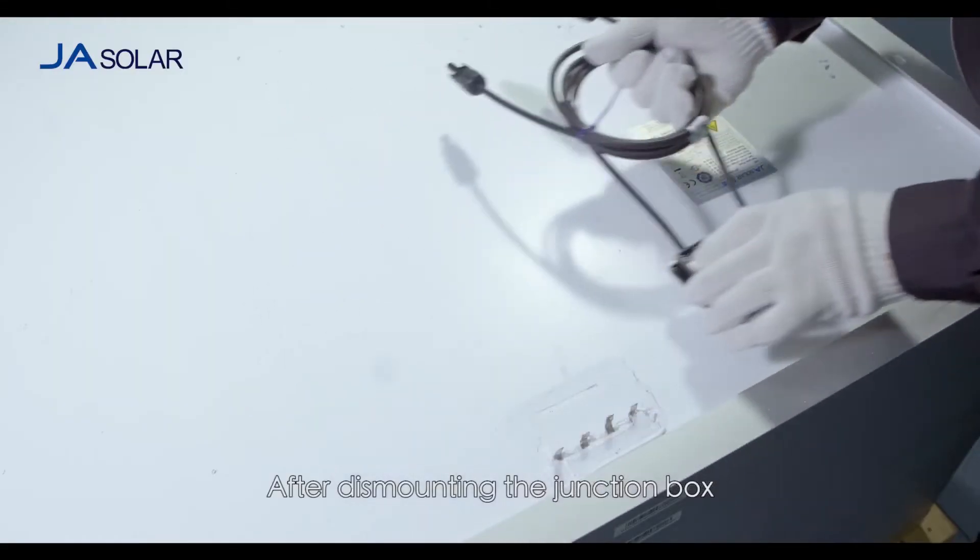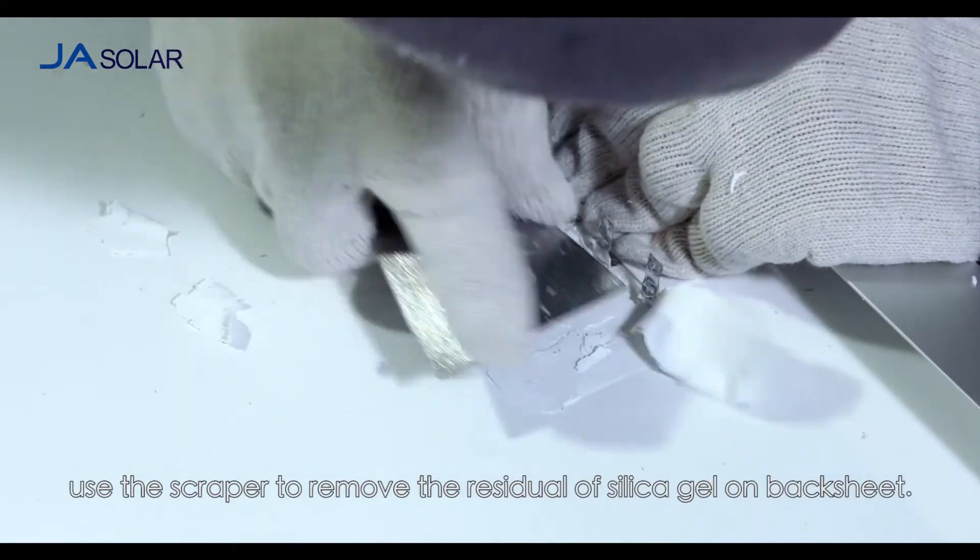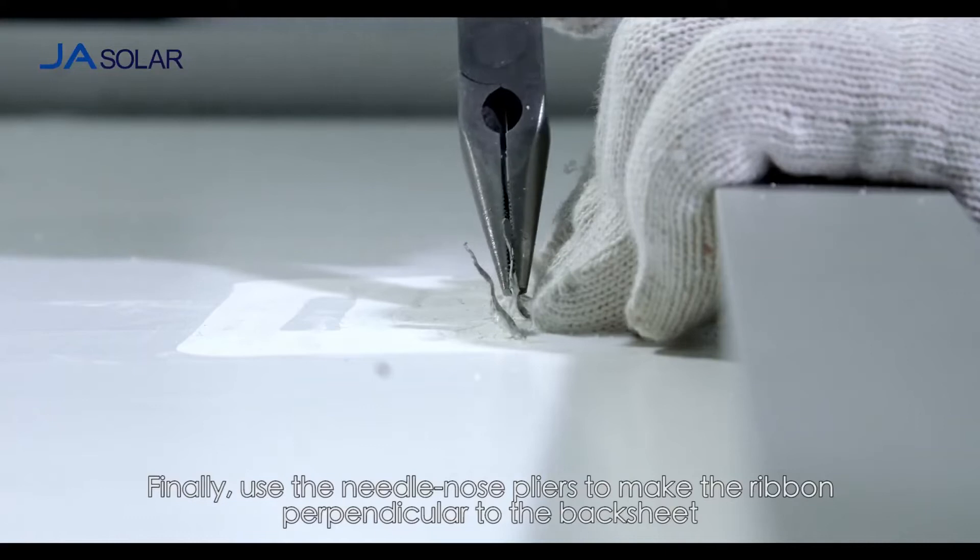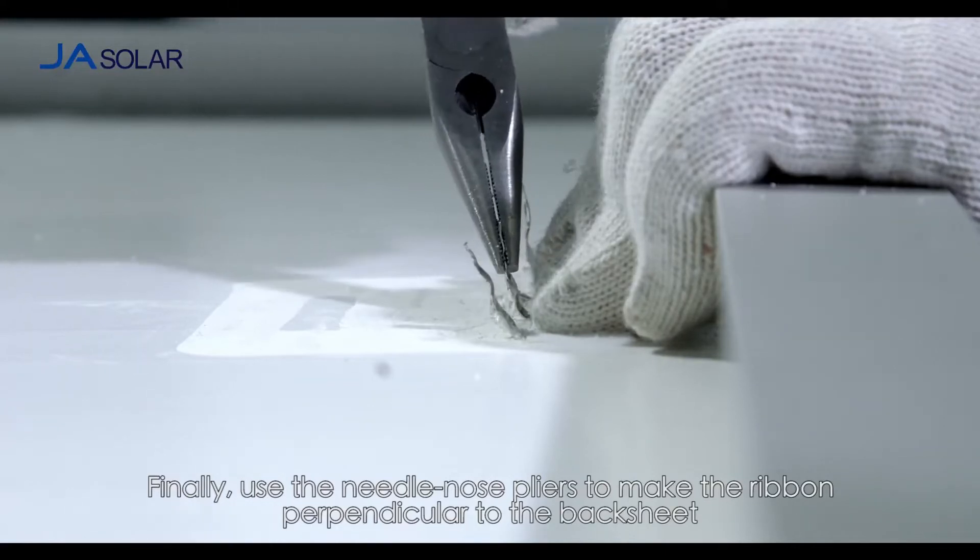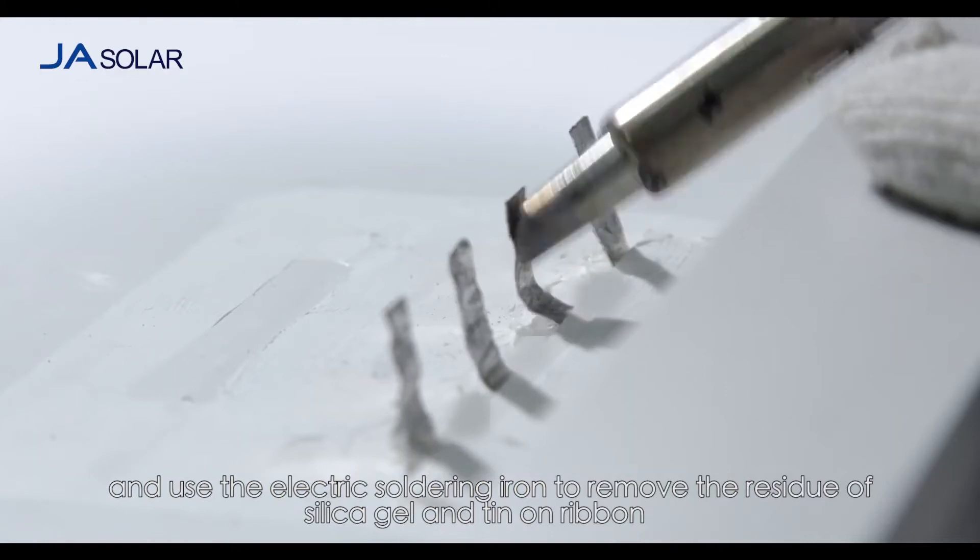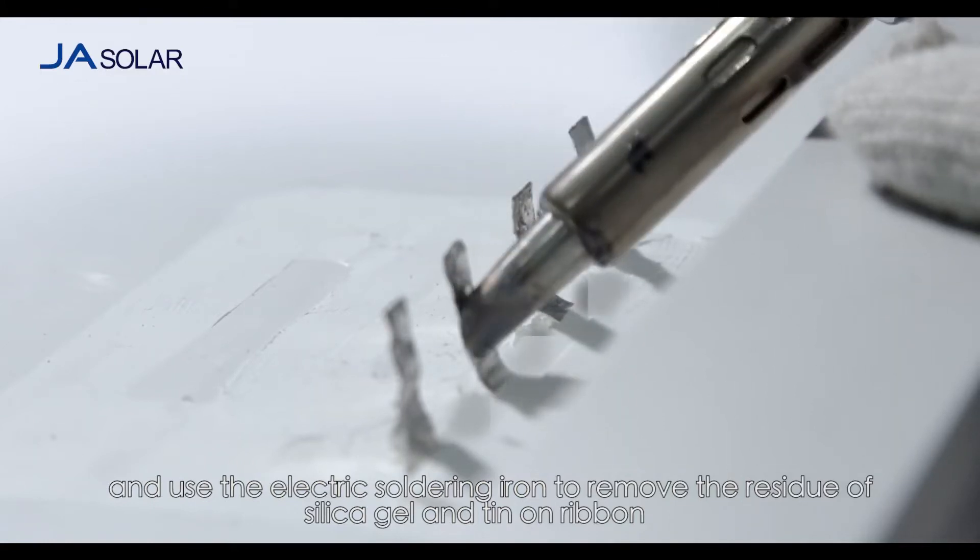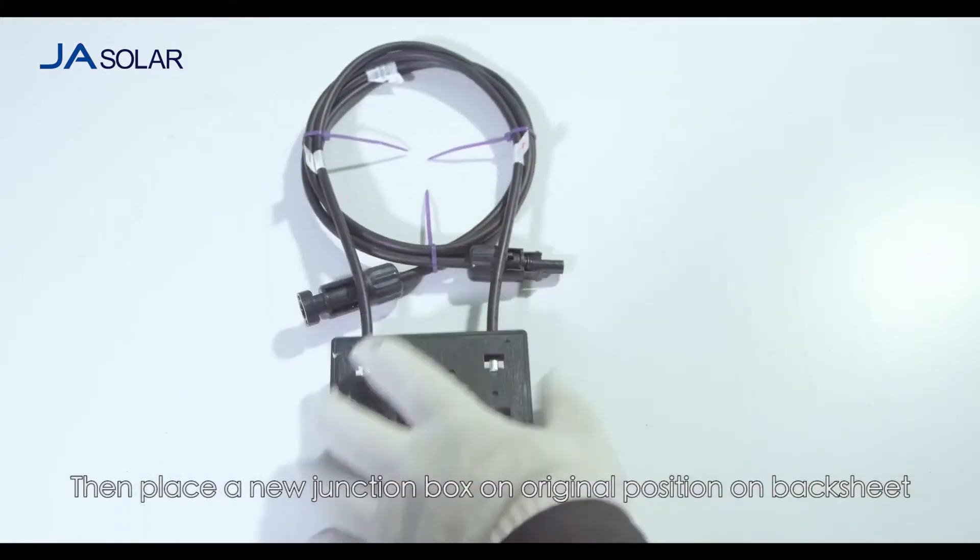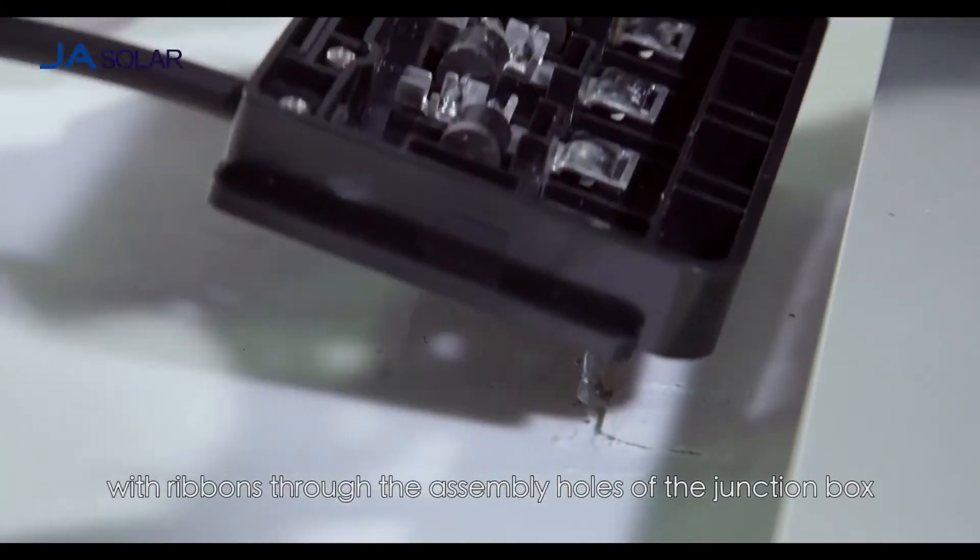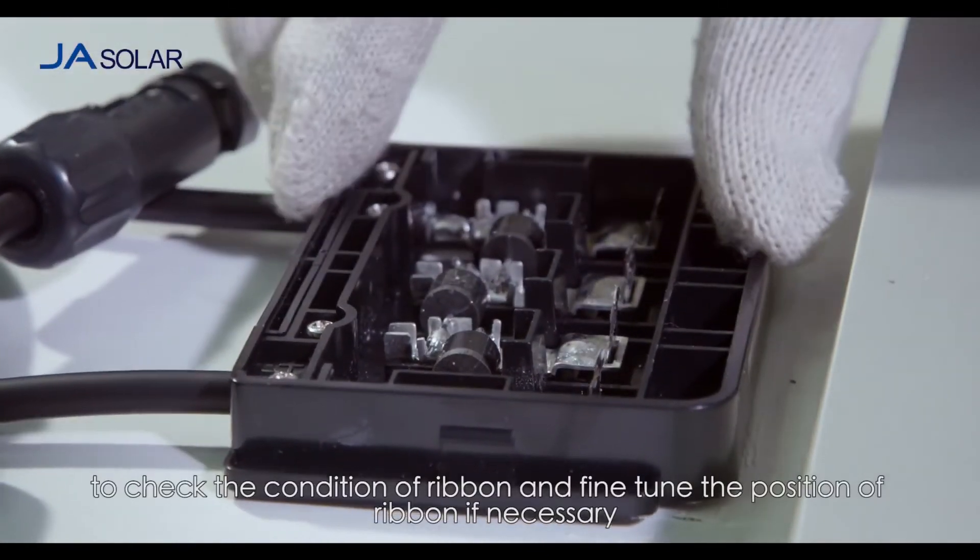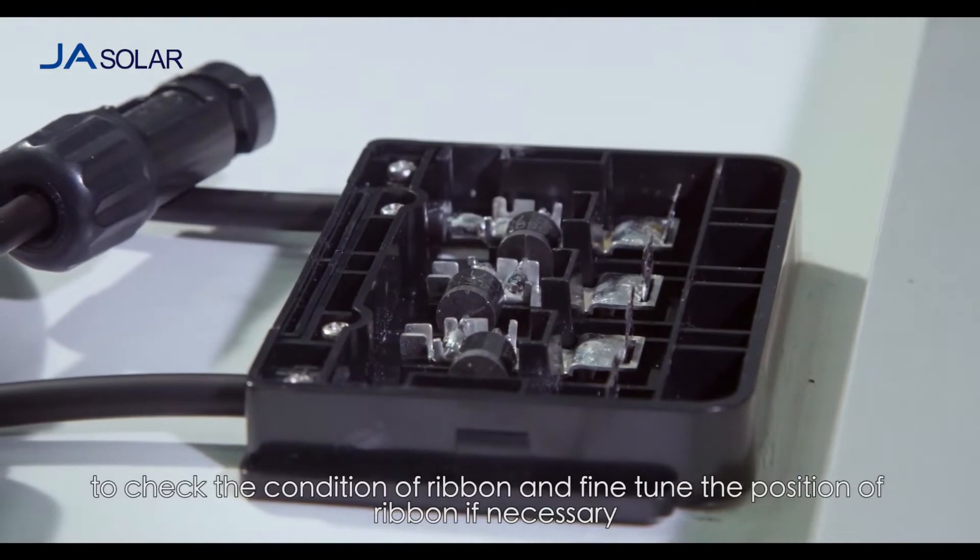After dismounting the junction box, use the scraper to remove the residual silica gel on back sheet. Finally, use the needle nose pliers to make the ribbon perpendicular to the back sheet and use the electric soldering iron to remove the residue of silica gel and tin on ribbon. Then, place a new junction box on original position on back sheet with ribbons through the assembly holes of the junction box to check the condition of ribbon and fine-tune the position of ribbon if necessary.